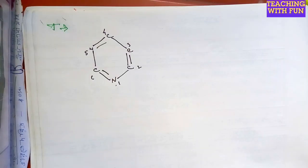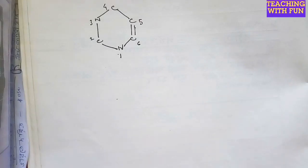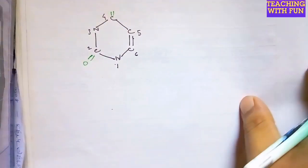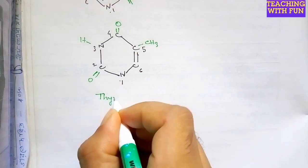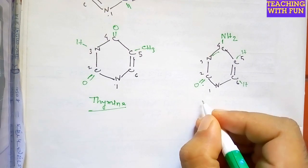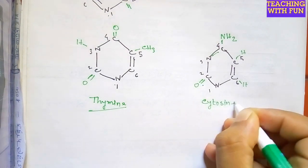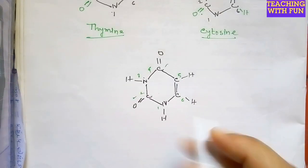Next is the pyrimidine base thymine, which is 2,4-dioxy-5-methylpyrimidine — positions 2 and 4 are dioxy, and position 5 is methyl. Next is cytosine, which is 4-amino-2-oxypyrimidine. Next is uracil, which is 2,4-dioxypyrimidine.